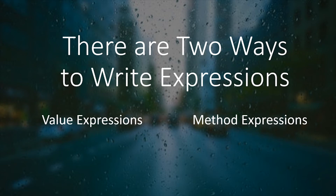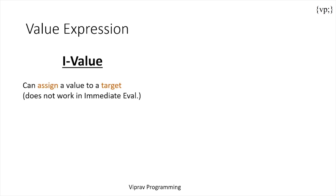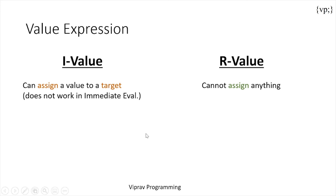There are two ways to write expressions. First, value expressions yield values. There's the L-value and the R-value. L-values can assign a value to a target but do not work with immediate evaluation. This means you can take a variable, assign a value to the target, hold on to that value — for example when a user inputs a value for a variable — and then use it for later operations. You can't do that with immediate evaluation since it takes a request and sends back a response immediately, meaning you can't assign a value to a target.